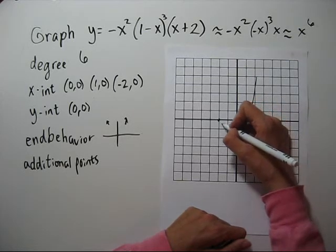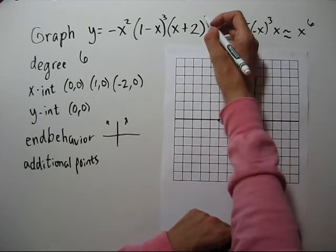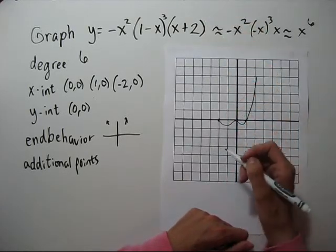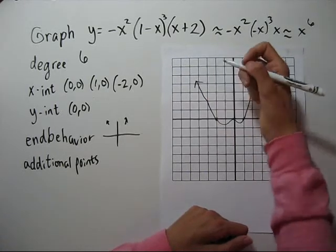Then I have to go up and get to the negative two next. Do I touch or cross? The multiplicity, it's one. Which means, since it's odd, I'm going to cross and I go back up.